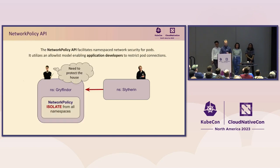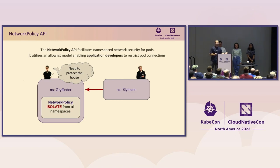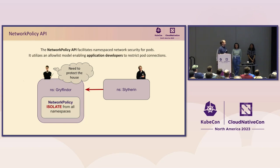Let's look at a slightly more complex case. Harry doesn't love Draco — Draco is a little evil — so we're going to block traffic from the Slytherin namespace. Today, developers really only have one tool that's part of the core Kubernetes API, and that is network policy. Most of us know what network policy is. It's been around for a long time. It's a stable API. It was originally made explicitly and only for the application developer.